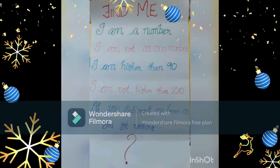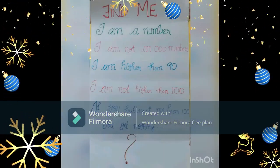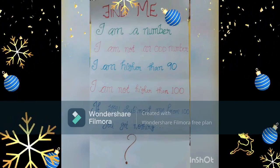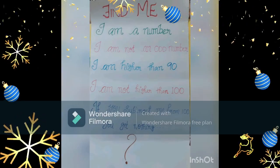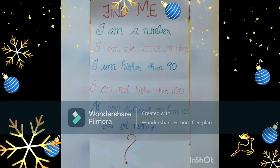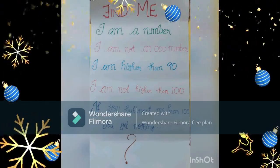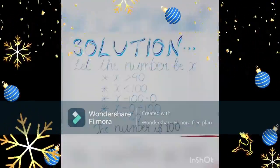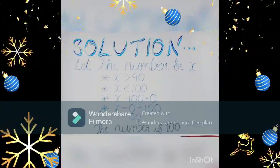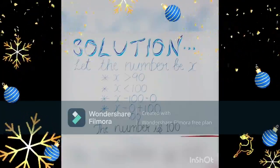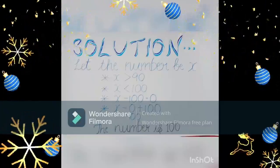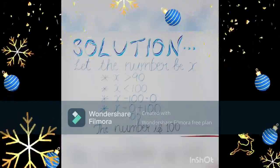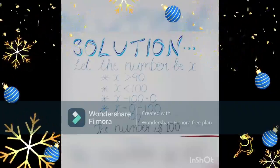Find me, I am a number, I am not an odd number, I am higher than 90, I am not higher than 100. If you subtract me from 100, you get nothing. Solution: let's consider the number be x. We know x is greater than 90 and x is less than 100. If you subtract x from 100, you get 0. So, the answer is 100.